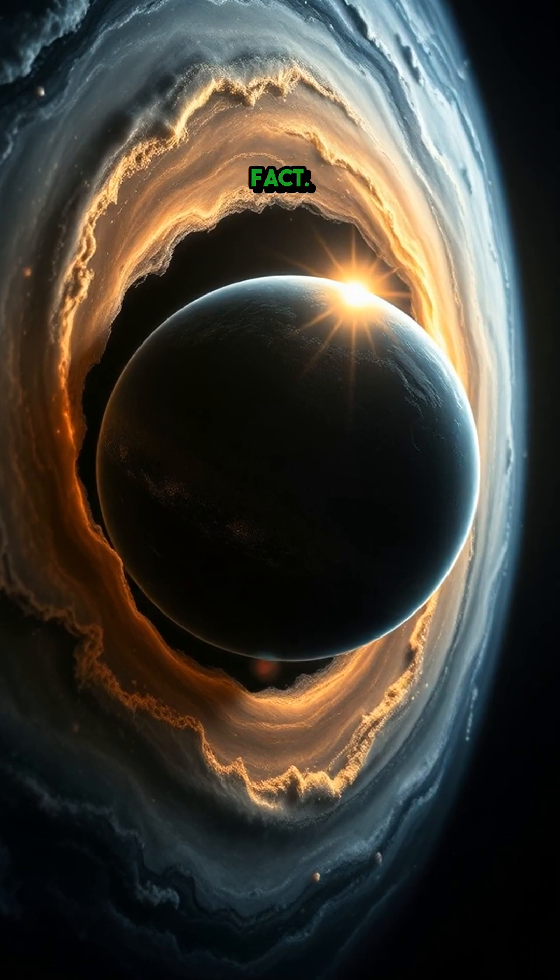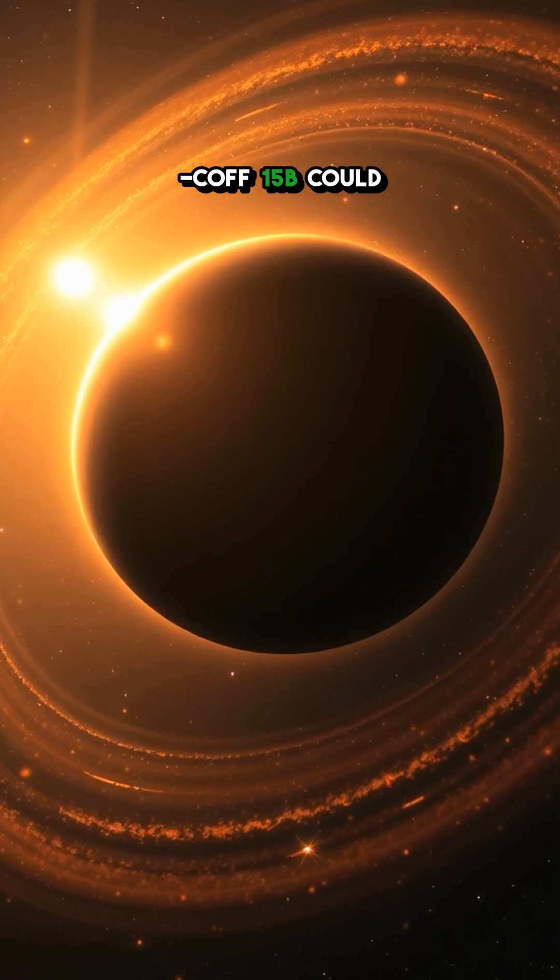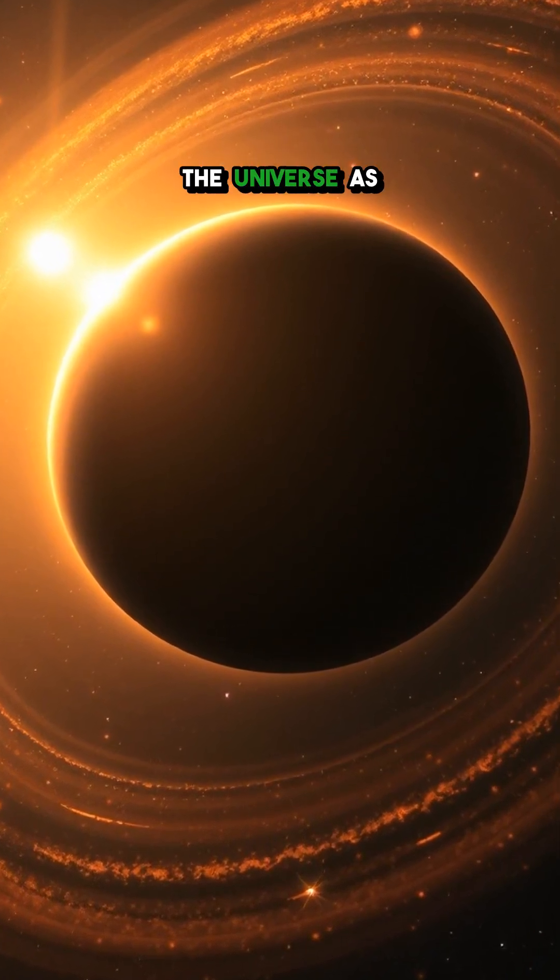And the most insane fact. Fact number five, some astronomers think Lkka 15b could have a gap in its disk, a sign it's carving out its own path in the universe as it forms.